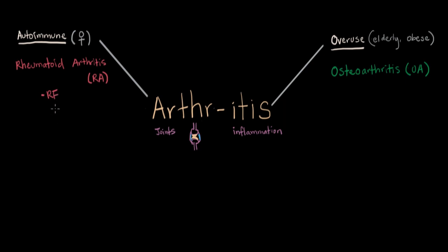Rheumatoid factor is something you can test for, and it pushes you towards a diagnosis of rheumatoid arthritis. The rest of the diseases in the autoimmune section are collectively referred to as seronegative arthritis — referring to the fact that in their serum, they don't have rheumatoid factor. This whole category separates rheumatoid arthritis from the other autoimmune arthritides. The other half of the category name refers to the fact that these diseases often involve the spine, not just the joints of the limbs — 'spondylo' refers to the spine. So: seronegative spondyloarthritis.